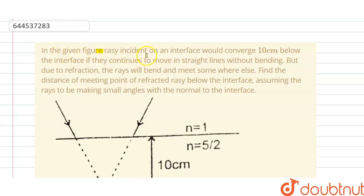In the given figure, rays incident on an interface would converge 10 centimeters below the interface if they continue to move in straight line without bending. But due to refraction, the rays will bend and meet somewhere else.